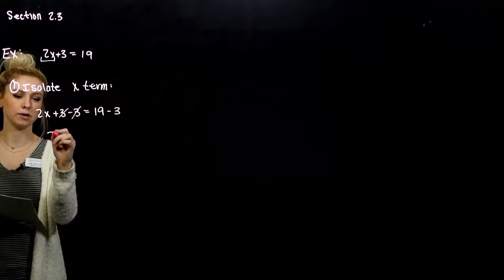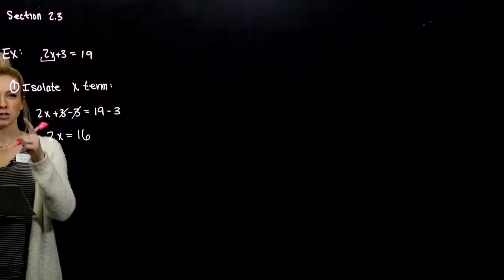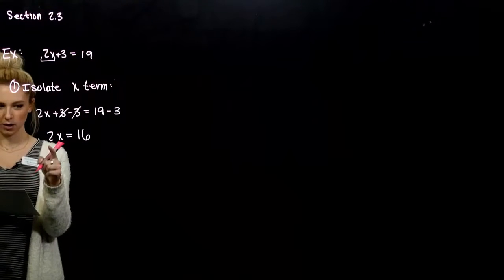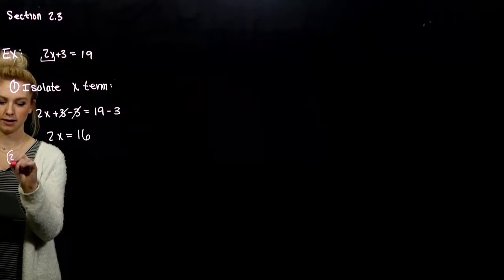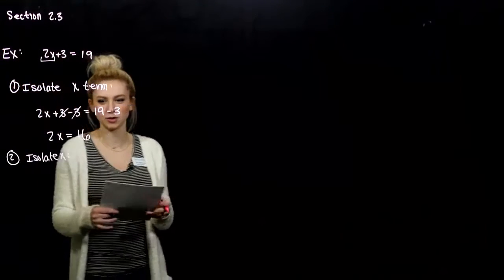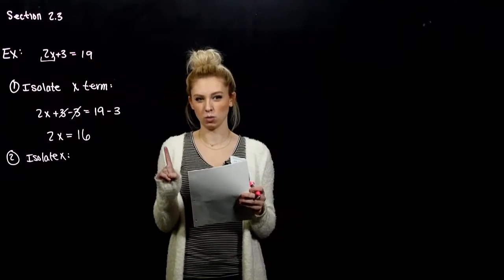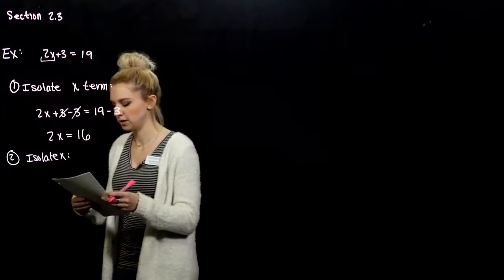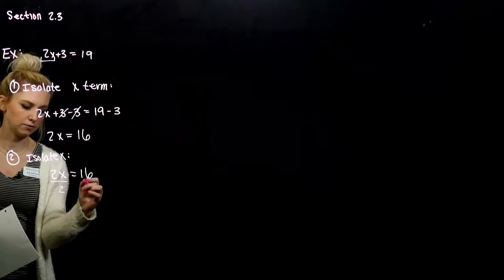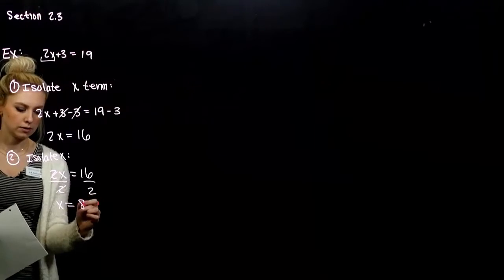It cancels over here. We're left with 2x on the left and 16 on the right. So now that we have that x term isolated — it's on its own along with the coefficient — we want to isolate x. Before we just wanted that term on its own, and then we take care of whatever coefficient is on the front; I want that to be a 1. I have a whole number out on the front, so I'm going to do division — divide both sides by 2. These cancel and we're left with x is equal to 8.